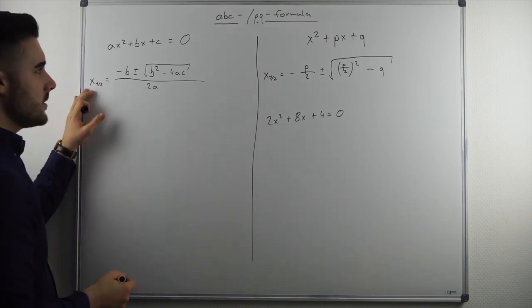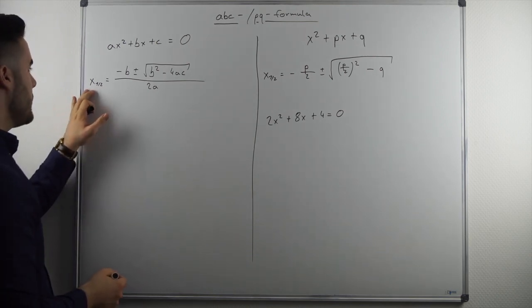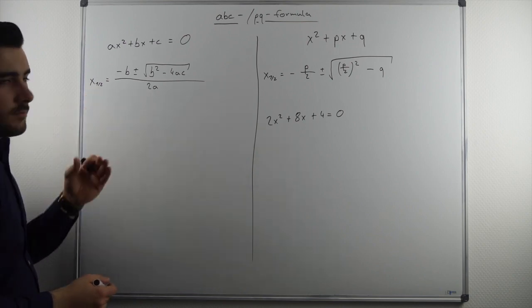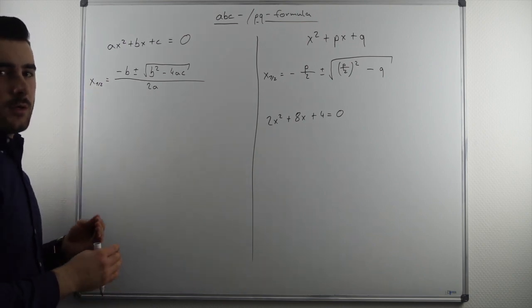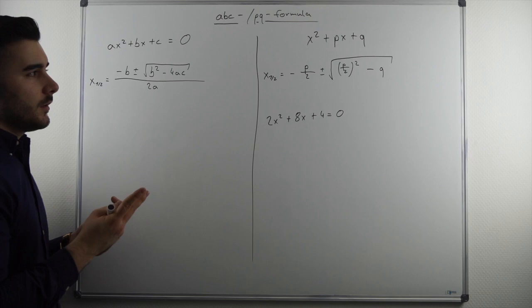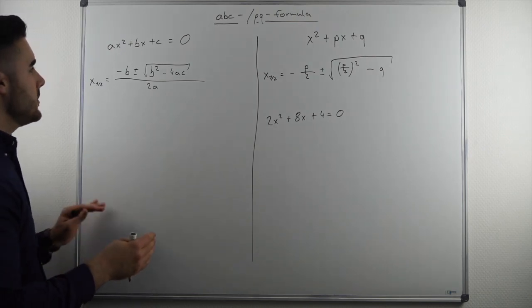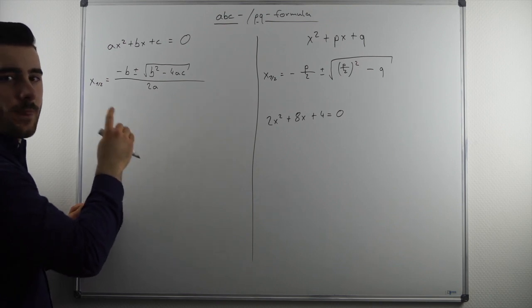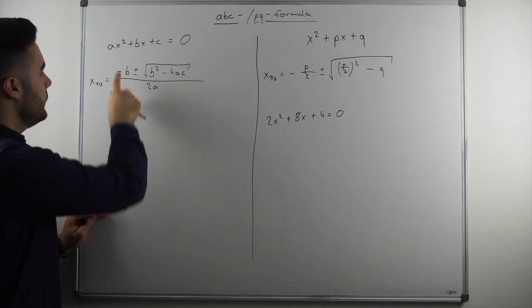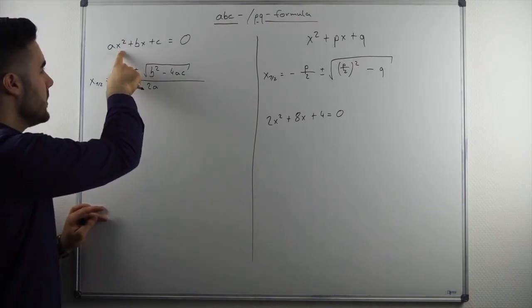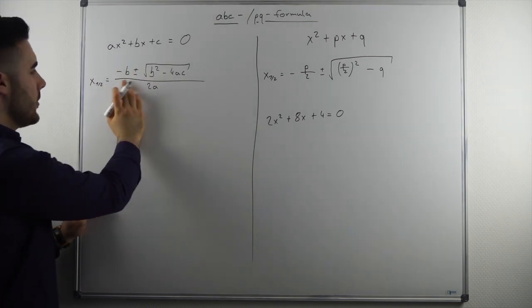And how does the ABC formula actually look like? So we have x and most of the times we are looking for two roots if we are putting it equal to zero because we assume that it is a function of degree 2 because the highest exponent is 2.